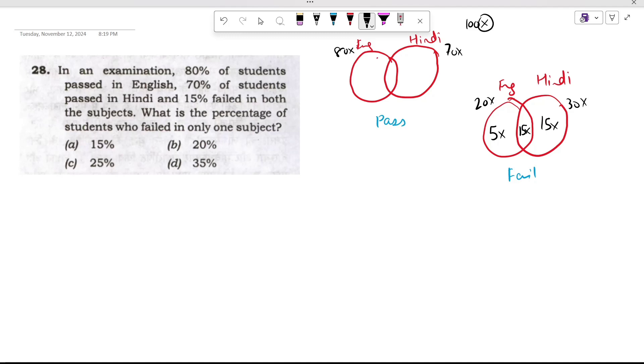Now, what is the percentage of students who failed only in one subject? 5X failed only in English, and 15X failed only in Hindi. So the percentage of students who failed in only one subject is 20X. 20X out of 100X is 20%. The answer is option B.